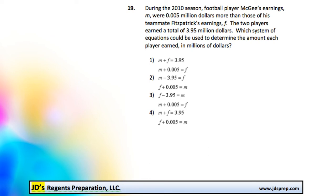I think to start off, it's probably easiest to see that the two players' combined total is $3.95. That means algebraically, if we added the two variables together, we would get $3.95.